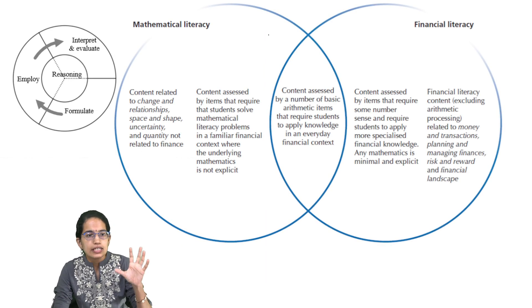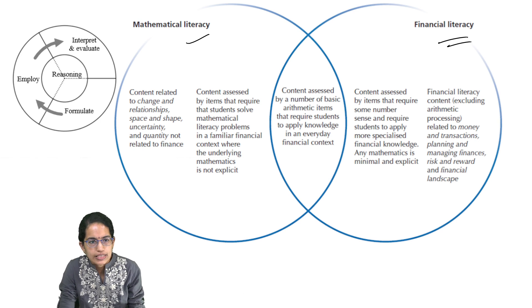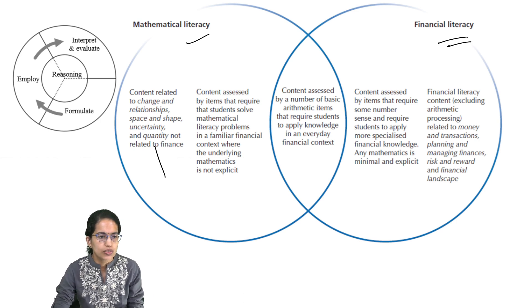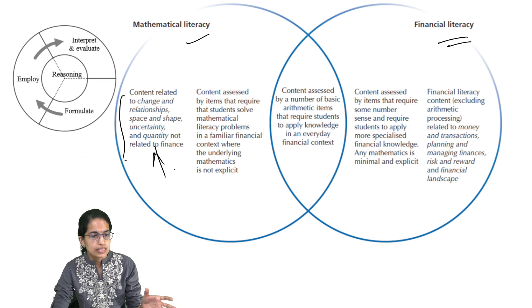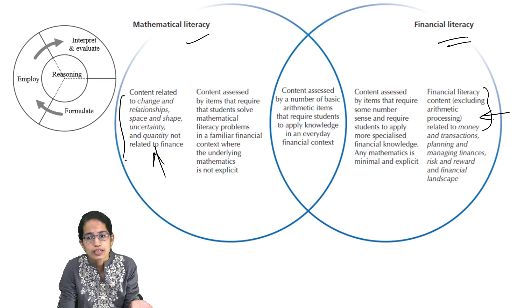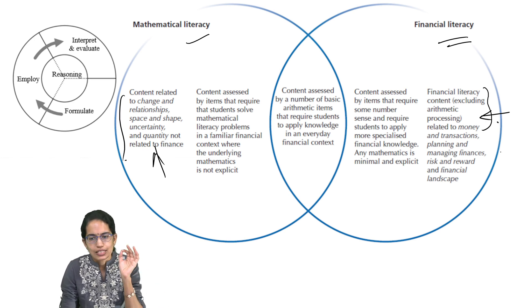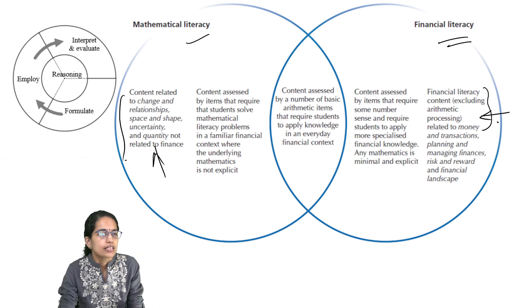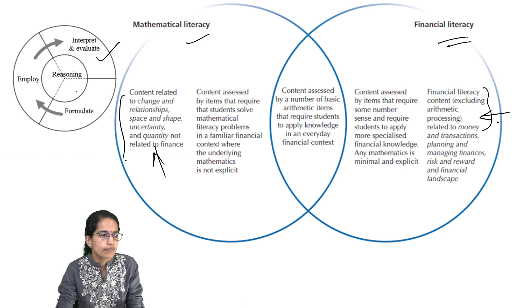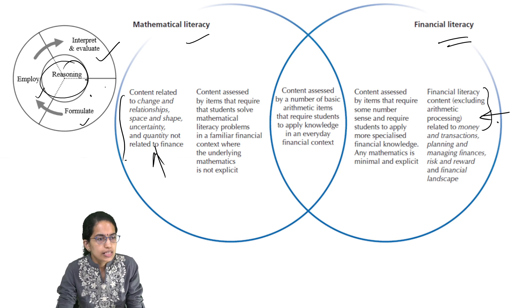Under the integration of mathematical and financial literacy: mathematical literacy covers relationships, space, and uncertainty, while financial literacy excludes arithmetic processing and relates to money transactions, planning, and managing finance. Mathematical literacy includes interpretation, evaluation, employment, formulation, and reasoning.